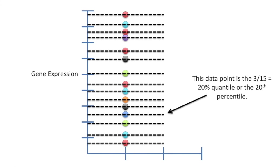This data point is the 3 divided by 15, or 20% quantile, or the 20th percentile. Calculating quantiles and percentiles is just a matter of finding out how many values are less than the value you're interested in.